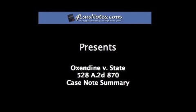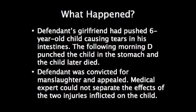Welcome to the case summary for Oxendine v. State on 4lawnotes.com. This is a case where a defendant's girlfriend had pushed a six-year-old child into a bathtub and caused tears in his intestines. The following morning, the defendant was trying to get the child out of bed and punched him in the stomach, and the child died later that day. The defendant was convicted for manslaughter and appealed on the basis that causation could not be established for the death of the child.